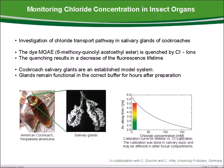Another example of FLIM for environmental sensing was measured by Karstoscher and co-workers at the University of Potsdam. They are investigating the chloride transport pathway in salivary glands of the model system of cockroaches. As a suitable dye for chloride concentration measurements, MQAE was chosen. The dye is quenched by chloride ions, leading to a decrease in fluorescence lifetime at higher chloride concentration.